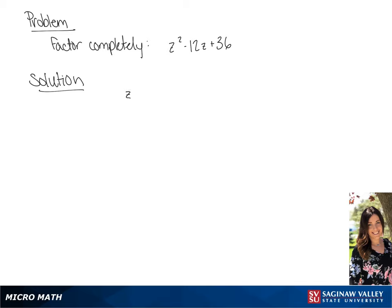We are factoring z squared minus 12z plus 36. We're going to break this up into two binomials. We know that z is the first term in both binomials, and we also know that 36 is a perfect square.